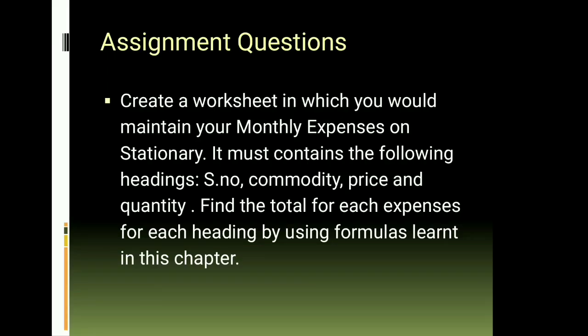Here are some practical questions for your practice. In this assignment, you have to create a worksheet in which you maintain monthly expenses on stationery. It must contain the following headings: first column — Serial Number, second column — Commodity, third column — Price, and fourth column — Quantity. Overall, you have to find the total for each expense heading by using the formulas learned in this chapter. I hope you understood well. Have a good day.